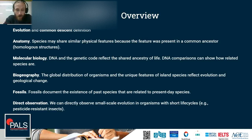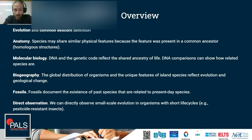We will have a look at biogeographical patterns of species distribution, and a little bit on island species and how this reflects evolution and geological change. We will look at the fossil records and how fossils document the existence of past species related to present-day species. And we will look at how we can directly observe evolution happening now, usually with organisms that have short life cycles like pesticide-resistant insects or antibiotic-resistant bacteria.